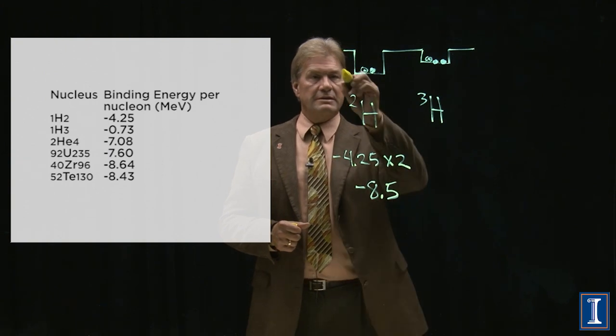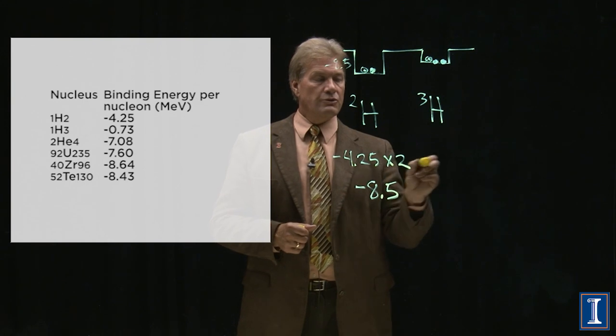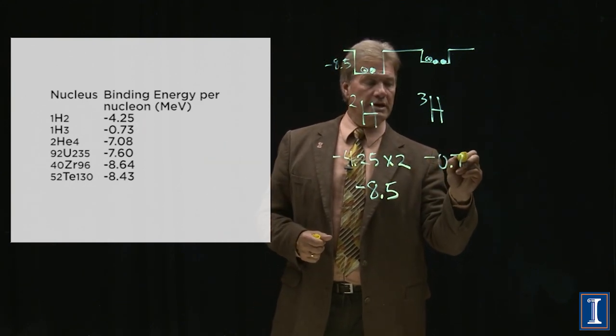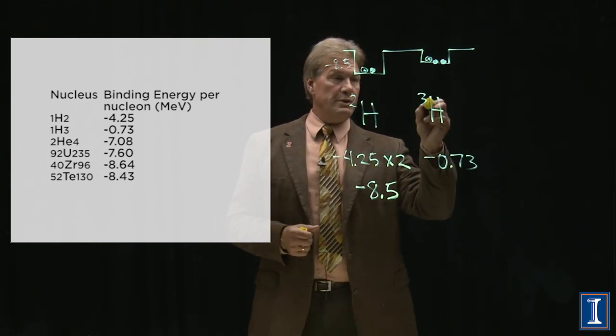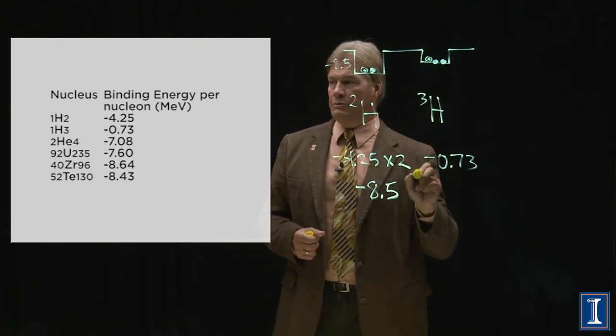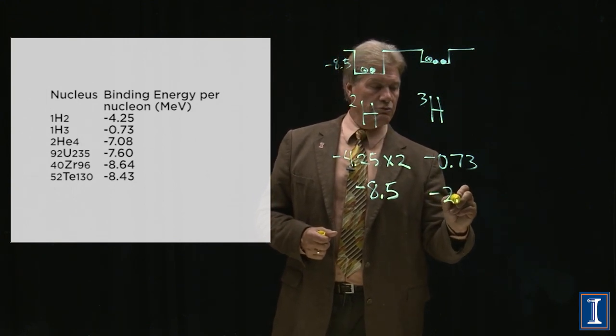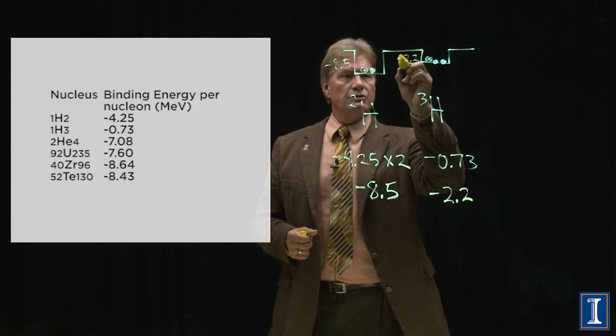That's the depth of this well, minus 8.5. Tritium, 1H3, minus 0.73. I multiply that by three, since there are three nucleons, and I'm going to get minus 2.2. That's the depth of this well, minus 2.2.